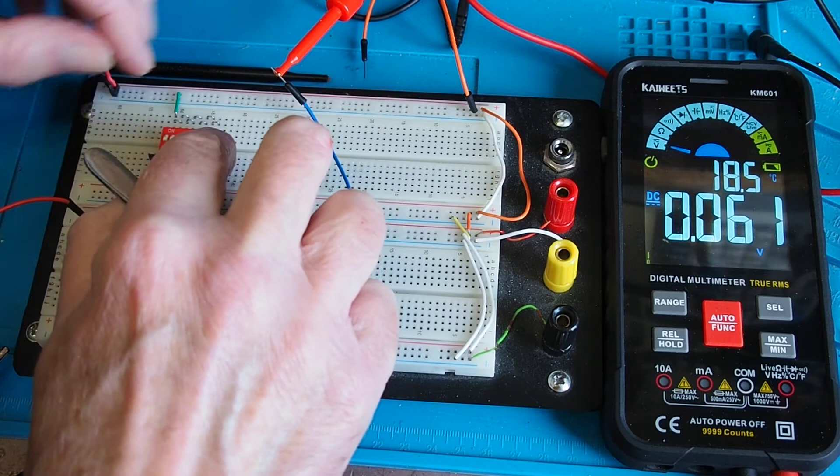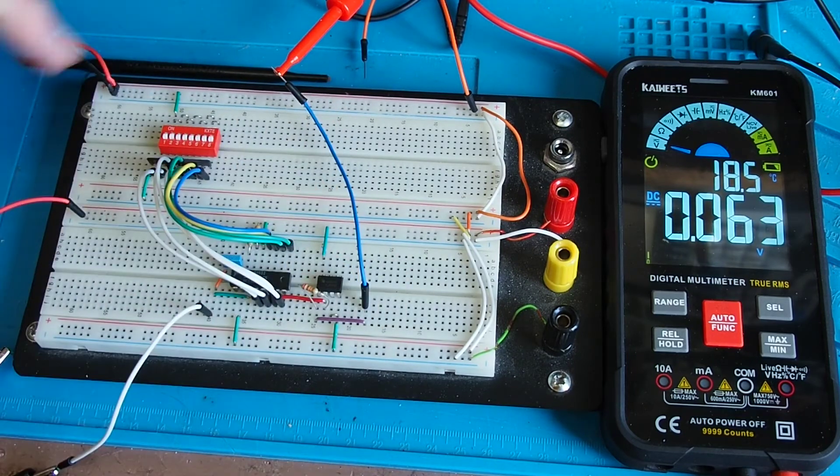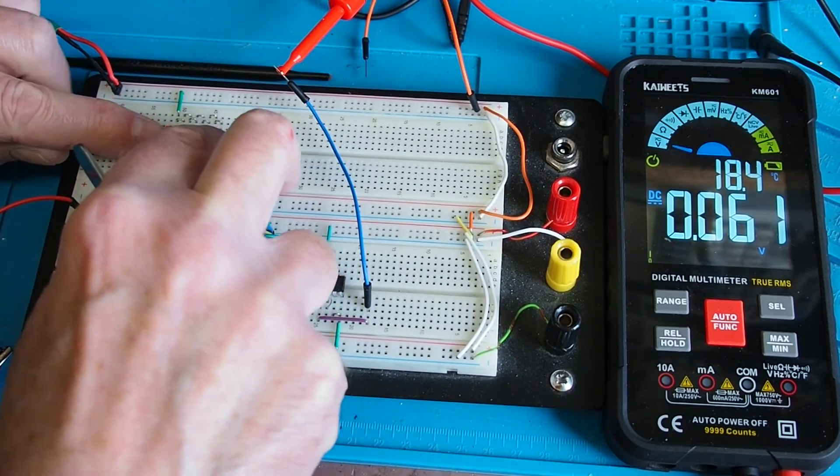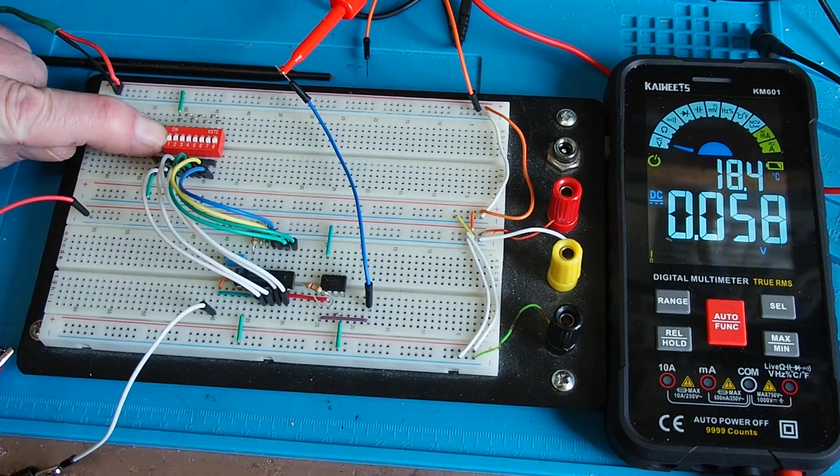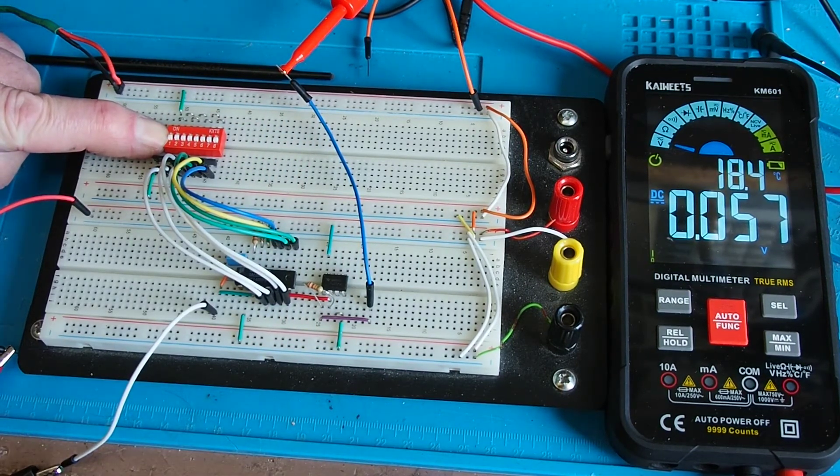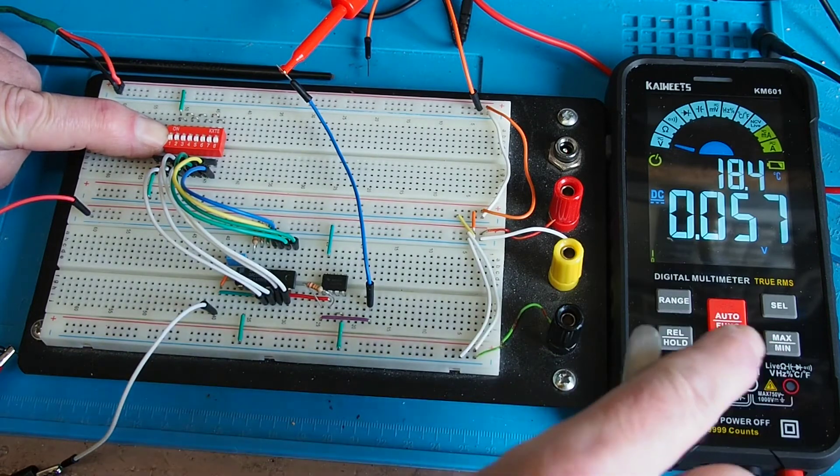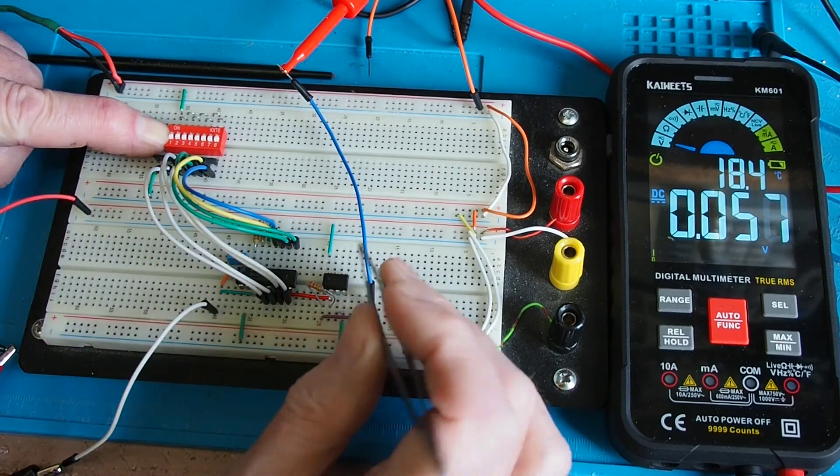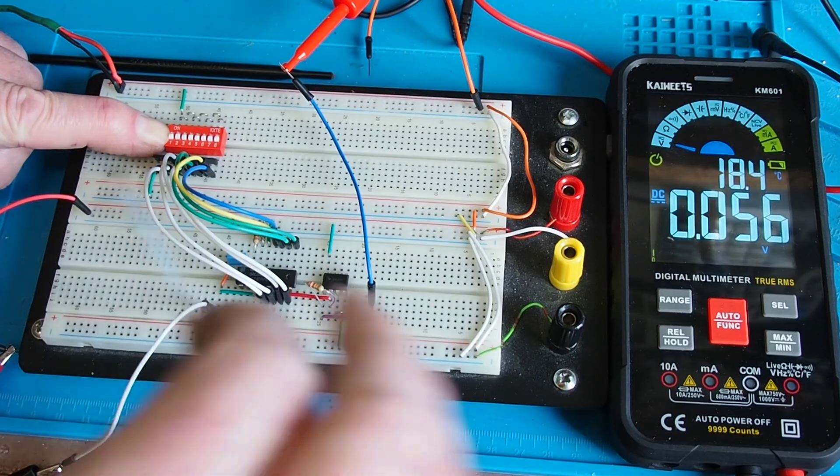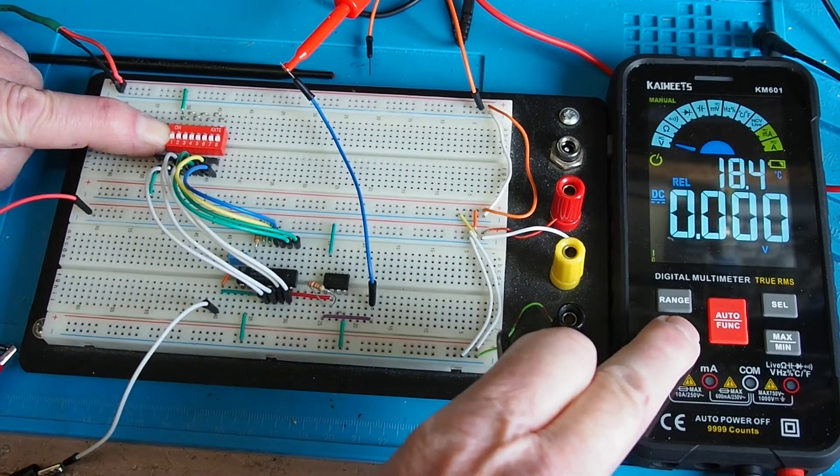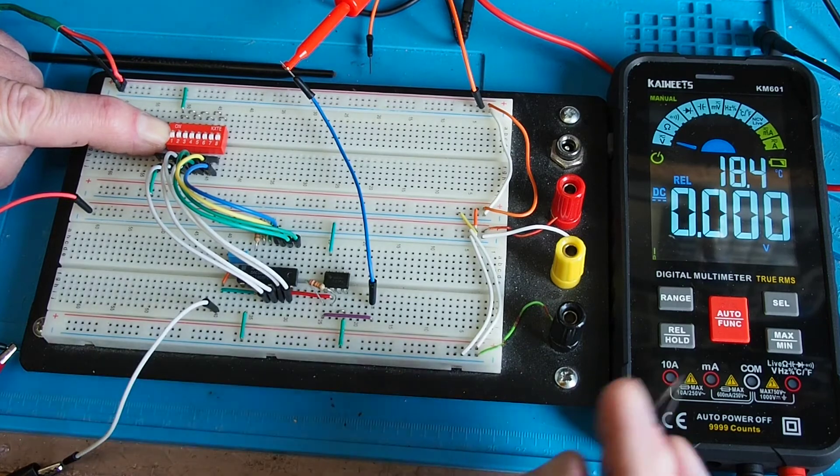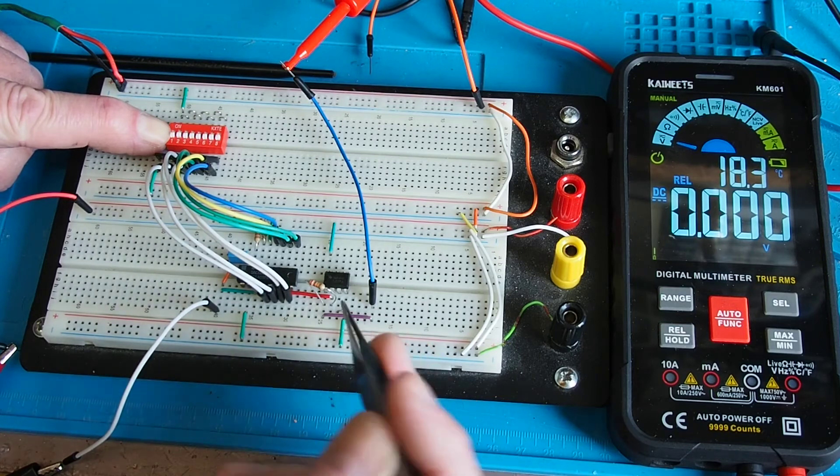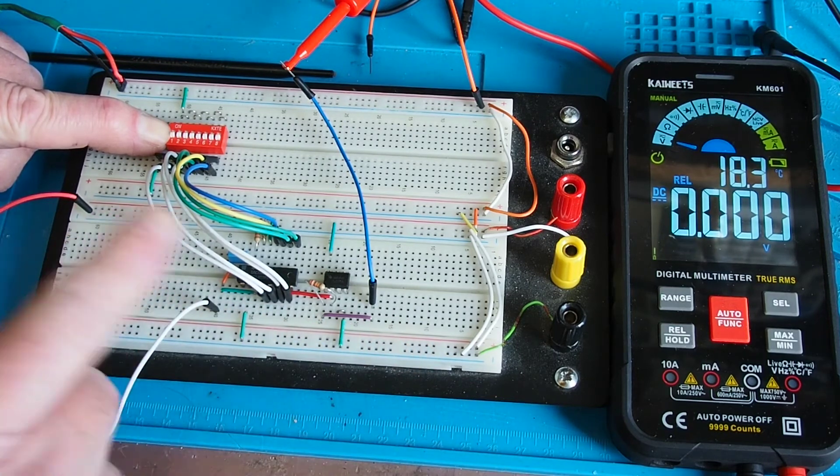Now this dip switch rather frustratingly is very fond of jumping out of my breadboard, so just for the purposes of a quick demo I'm going to adopt a hold it in with my finger approach. Now what I'm going to do is currently the Kiwi is telling me that I've got about 57 millivolts coming out of the op amp. I've got it into the multimeter here so I'm going to press and hold relative so now it's measuring the relative voltage and it's ignoring that voltage that was coming out when the converter was set to all zeros.